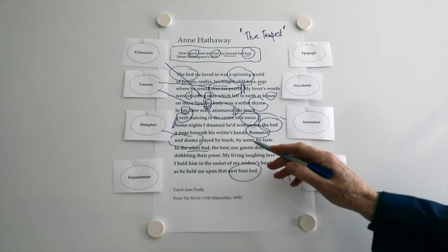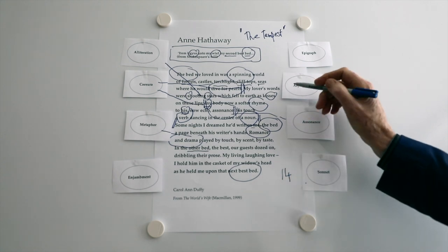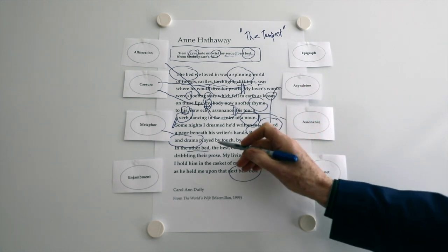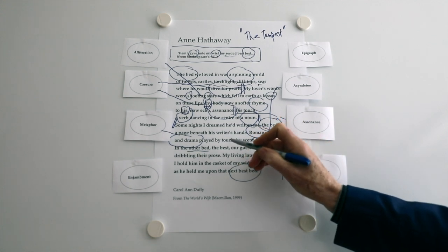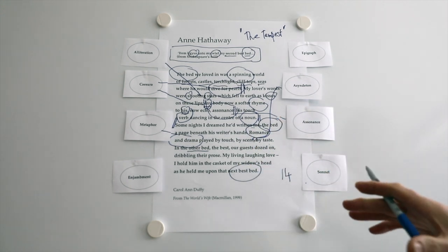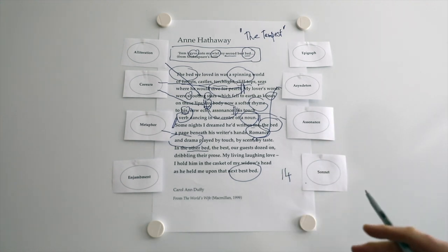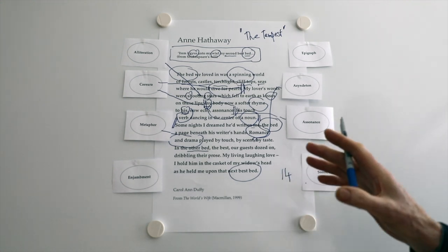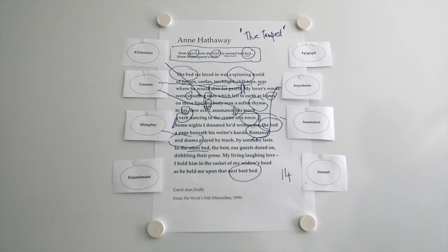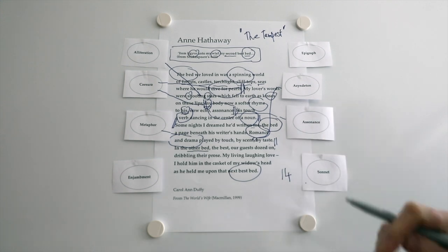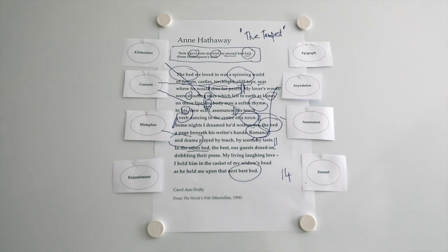And then touch, by scent, by taste. We've got the asyndeton. Let's refer that down to here as well. The commas. Touch, by scent, by taste. These are how he, as a writer, makes his audience. Makes his readers feel the language. Sort of experience the language through his images. Now, at this point, there's a full stop. And then we get the last four lines.